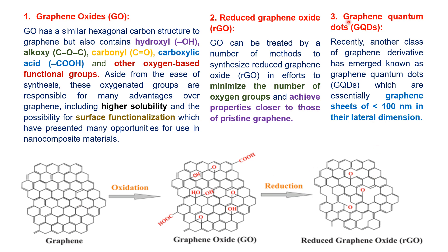The third derivative is graphene quantum dots. In this case, the graphene sheets have a lateral dimension or lateral diameter of less than 10 nanometers.